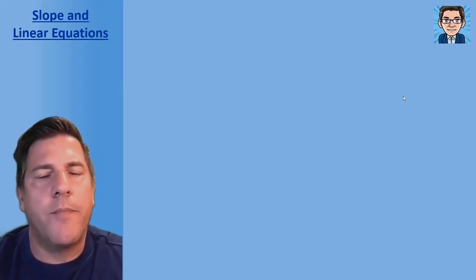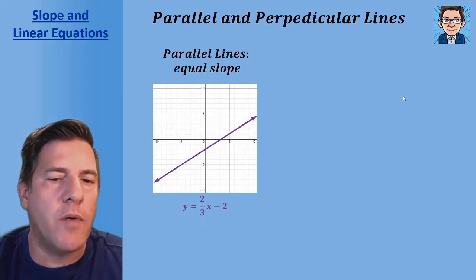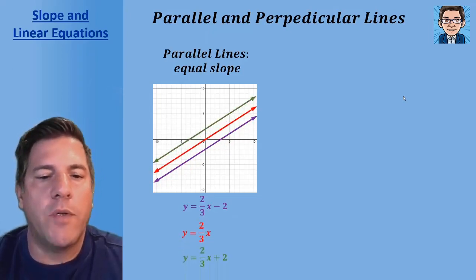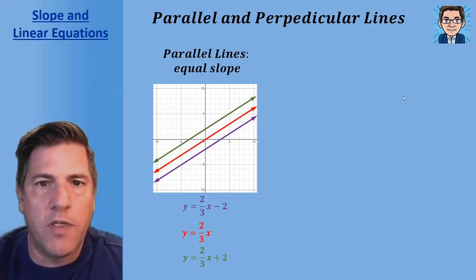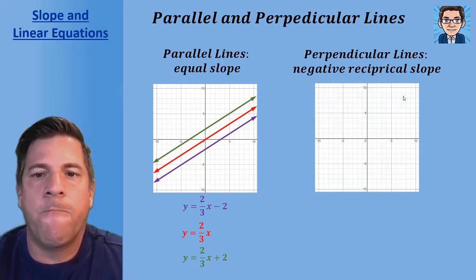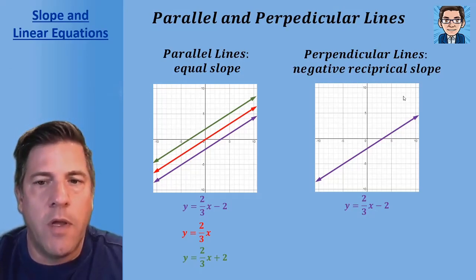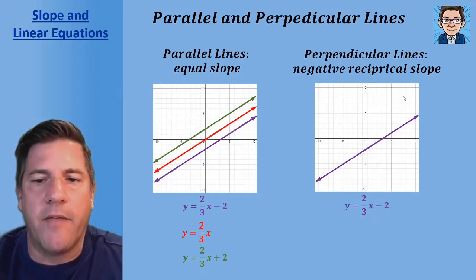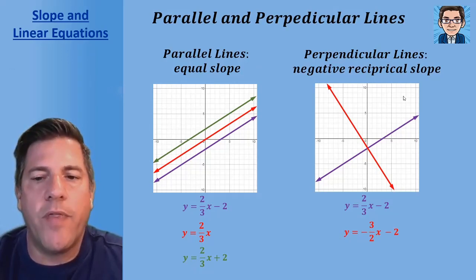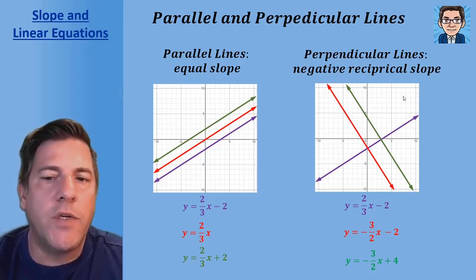One last concept: parallel and perpendicular lines. Parallel lines have equal slope. Looking at y equals two-thirds x minus two, any line with the same slope — like y equals two-thirds x, or y equals two-thirds x plus two — will be parallel. Perpendicular lines have a negative reciprocal slope. So for y equals two-thirds x minus two, we flip two-thirds to three over two and make it negative, giving negative three-halves. Any line with slope negative three over two is perpendicular to our line with slope two over three.